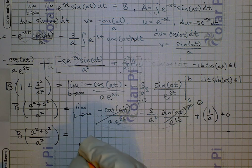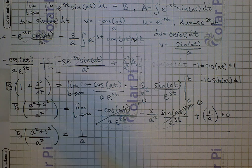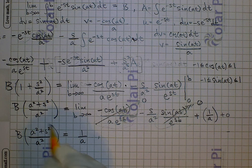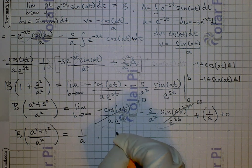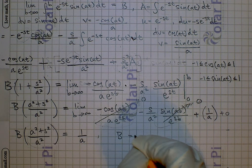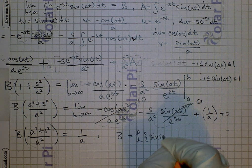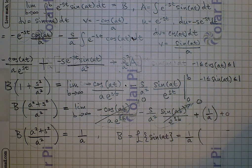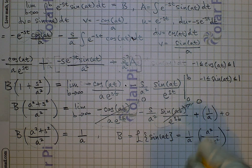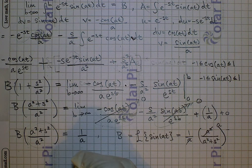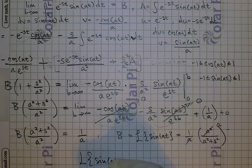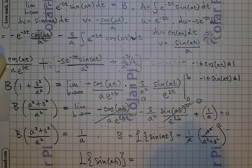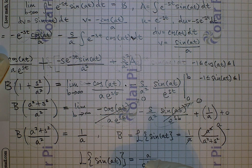So the right side is just one over a once we evaluate the limit. It's clear what to do next: multiply both sides by the reciprocal of a squared plus s squared over a squared. So B, which is L of sine of at, equals one over a times a squared over a squared plus s squared. This a and that a squared simplify to an a, so L of sine of at equals a over a squared plus s squared.